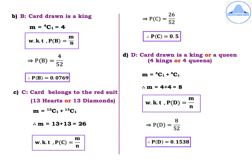Second subdivision: define event B as card drawn is a king. There are 4 kings in a pack of cards — one belongs to spades, one to clubs, one to hearts, and one to diamonds. Out of these 4 kings we select only one, so m = 4C1 = 4. Therefore P(B) = 4/52 = 0.0769.